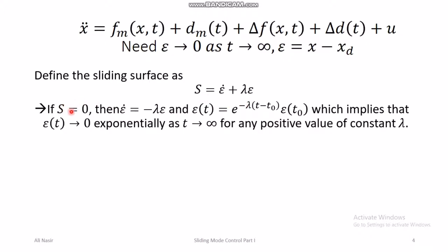How is s equal to zero useful? If s equals zero, then e_dot equals minus lambda times e. Solving this differential equation gives e(t) equals e(t_0) times e^(−lambda(t − t_0)). For any positive value of lambda, this ensures e goes to zero as t goes to infinity — which is exactly what we want. So this definition of the sliding surface is good, and s equal to zero gives us what we want.